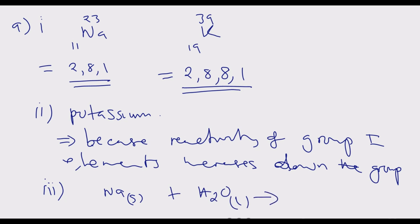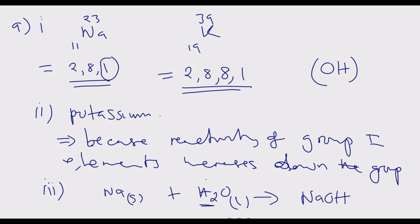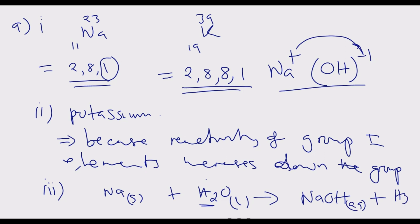Sodium displaces one hydrogen from water. We end up with hydrogen and oxygen, which forms a hydroxide — sodium hydroxide. Remember, sodium is a group 1 element with a charge of positive 1, and the hydroxide ion has a charge of negative 1, so sodium donates its electron. The products are sodium hydroxide in aqueous solution and hydrogen gas.